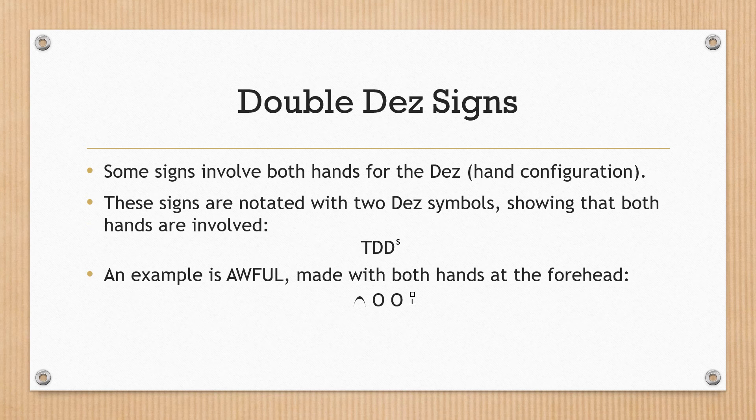Double DES signs. Some signs involve both hands for the DES hand configuration. These signs are notated with two DES symbols, showing that both hands are involved. An example is AWFUL, made with both hands at the forehead.